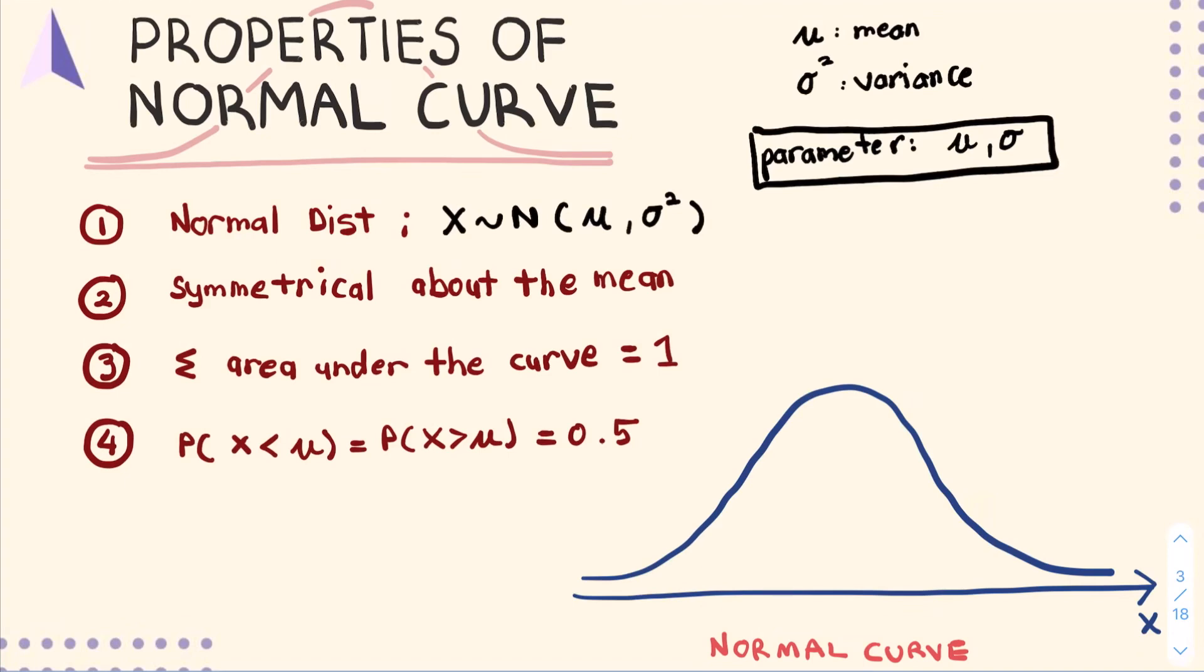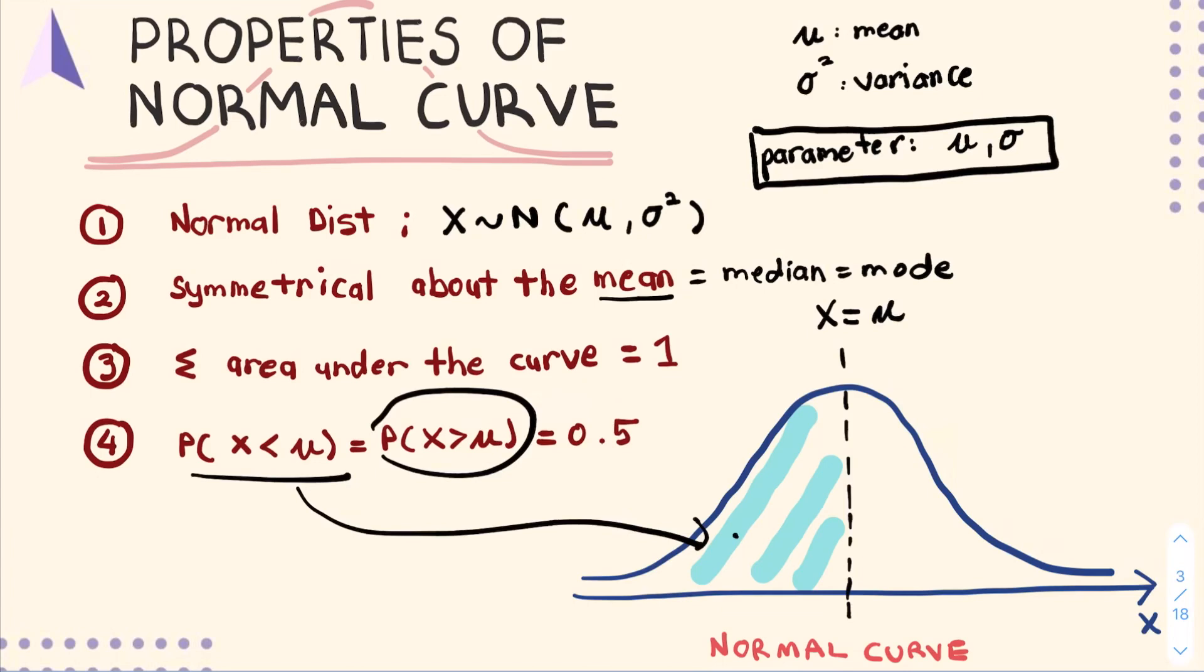Now the normal distribution and the normal curve has a property that says symmetrical about the mean. If this is your normal curve, symmetry about the mean is in the middle part, X equivalent to μ. The properties also say that the mean is equivalent to the median and also the mode. The area under the curve is equivalent to 1. If the whole area is 1, half of the symmetrical curve is 0.5. This part is 0.5, and this particular part is also 0.5.